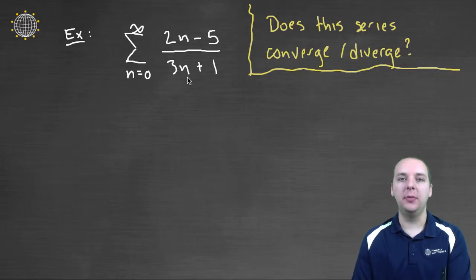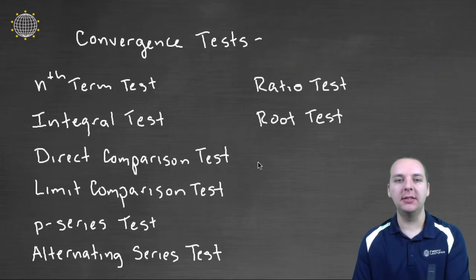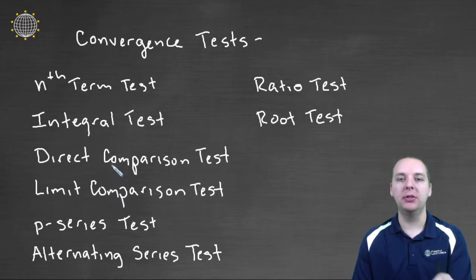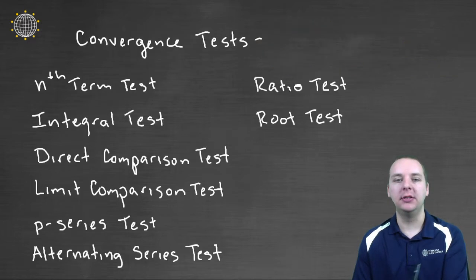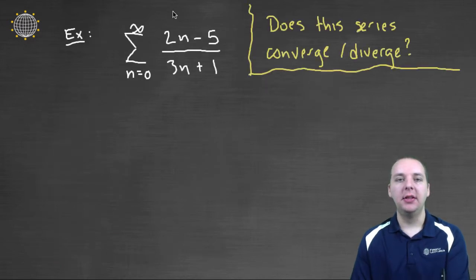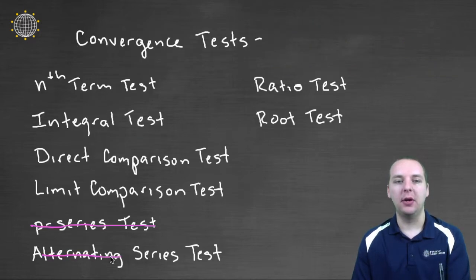To answer this question, we really need to be familiar with most of our tests. So let's look at our different tests and let's start using some of these to exclude what we might use for this problem. For instance, I see right off the bat there's no way this is a p-series, it looks nothing like a p-series, so we're not going to use the p-series test. I also see there's no terms here that alternate plus minus plus minus, so it's pretty clear it's not going to be alternating.